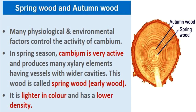In spring season, cambium is very active and produces many xylary elements — that is secondary xylem. It forms many xylary elements having vessels with wider cavities. These vessels are formed with wider cavities during spring season, and this wood is called spring wood or early wood. It is lighter in color and has a lower density.